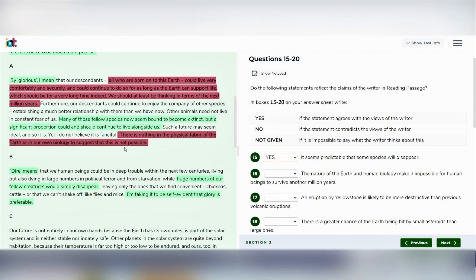And in the same paragraph the last line also says there is nothing in the physical fabric of the earth or in our own biology to suggest that this is not possible. So the passage saying that it is very much possible that the humans can live for another million years. So the statement is no because it contradicts with what is written in the passage.